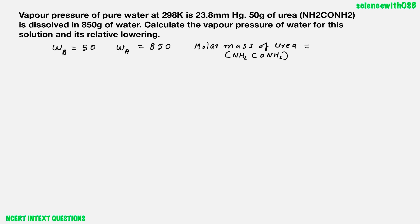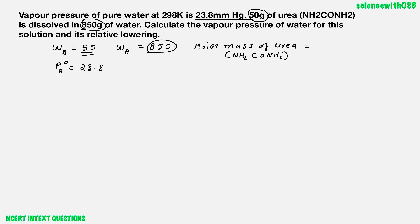First, we can write the given values. Vapour pressure of pure water, Pa standard, is given as 23.8 mmHg. Mass of the solute is 50 grams. Mass of the solvent is 850 grams.